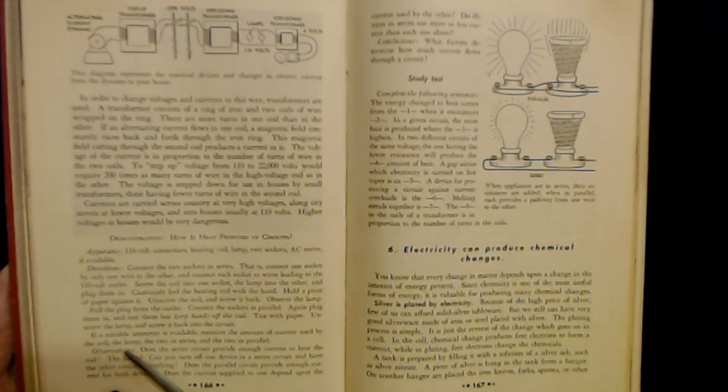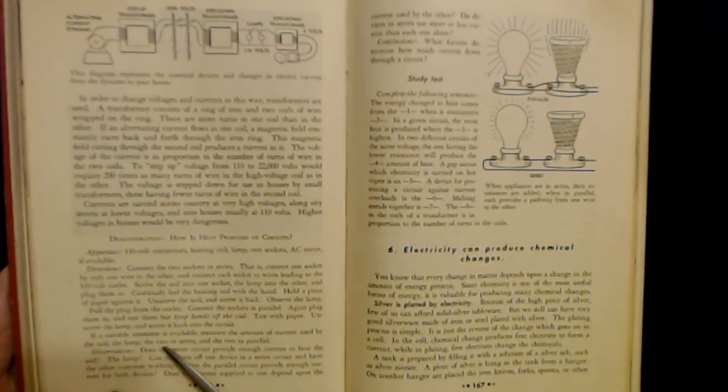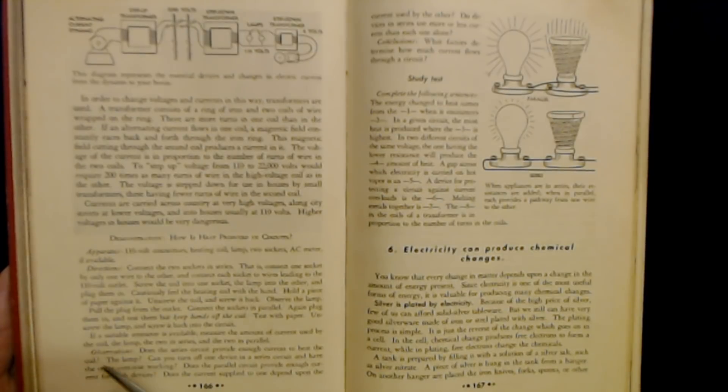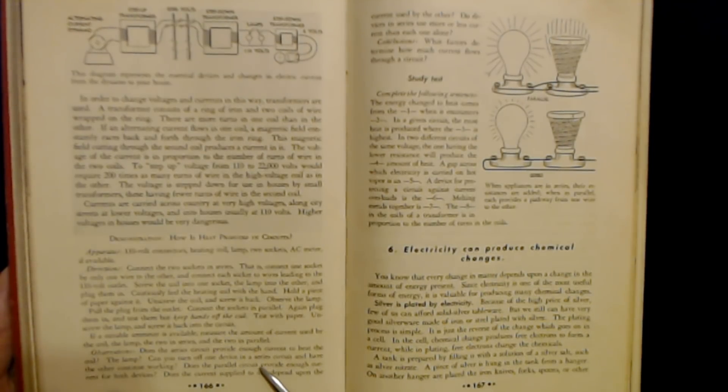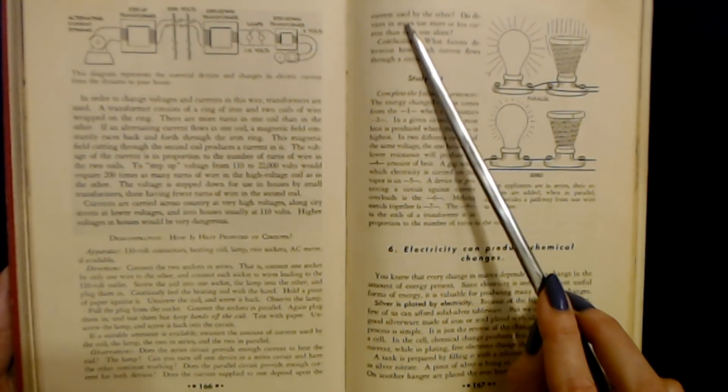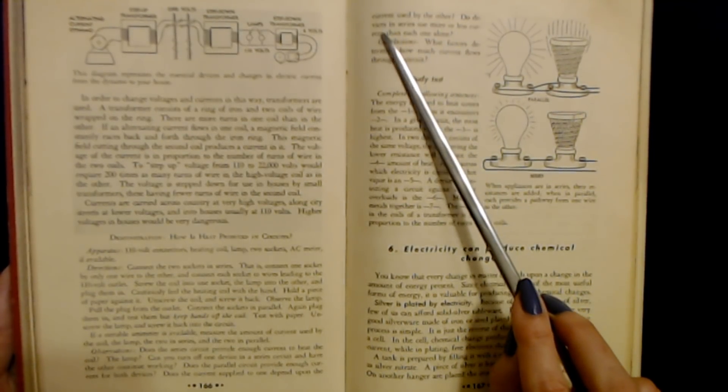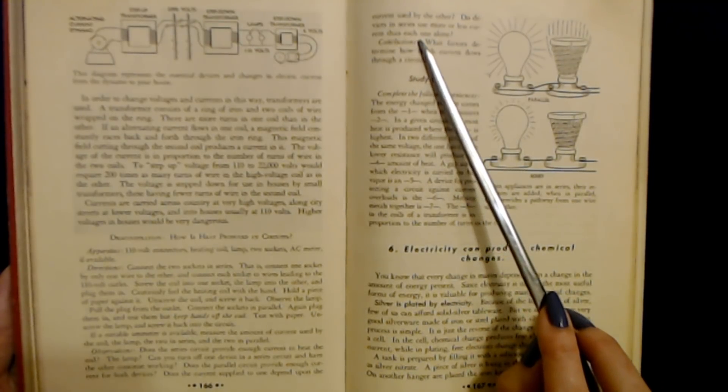If a suitable ammeter is available, measure the amount of current used by the coil, the lamp, the two in series, and the two in parallel. Observations: Does the series circuit provide enough current to heat the coil, the lamp? Can you turn off one device in a series current and have the other continue working? Does the parallel circuit provide enough current for both devices? Does the current supplied to one depend upon the current used by the other? Do devices in series use more or less current than each one alone?